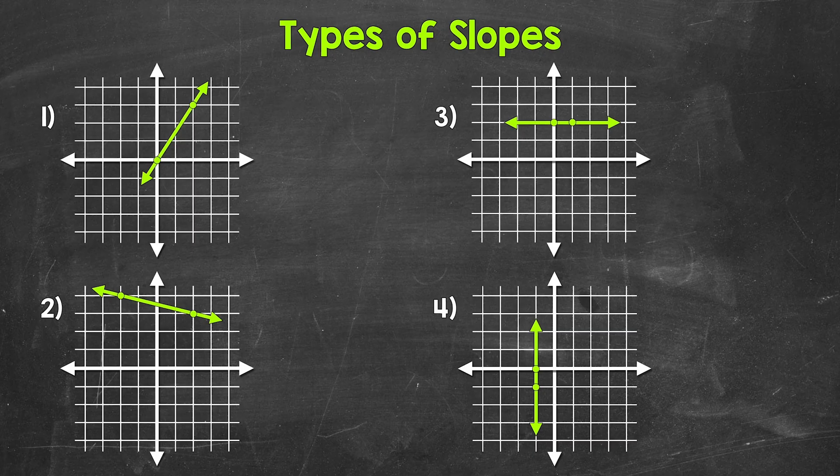Let's jump into number one, where we have a line moving upward as it's moving from left to right. So there is positive vertical change from left to right. This line is moving upward — the Y values are increasing as the X values are increasing. This is an example of a positive slope.